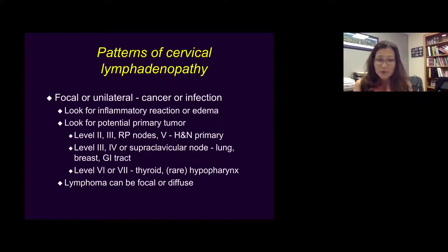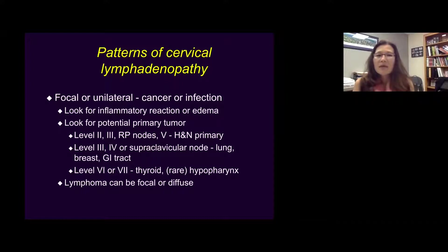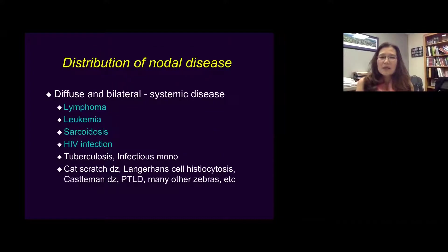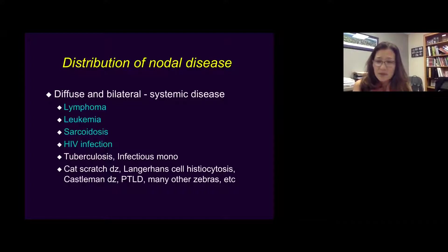Lymphoma can be diffuse or focal, so it can be a tricky one. With diffuse bilateral nodes, think lymphoma, leukemia, thyroiditis, and also HIV infection, which can also give you diffuse bilateral lymph nodes.